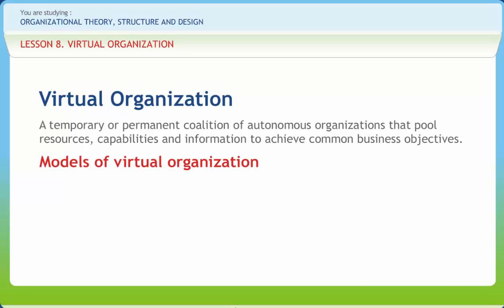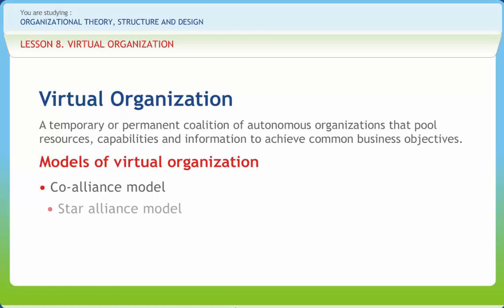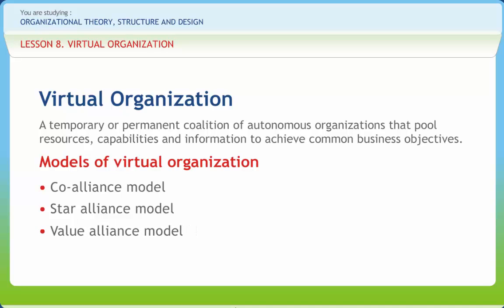Models of virtual organization include the Co-Alliance Model, where several organizations come together to work on a project-by-project basis. The Star Alliance Model consists of a co-dominant organization and other satellite organizations or individuals. The Value Alliance Model is where interrelated products, facilities and services of a supply chain are brought together.